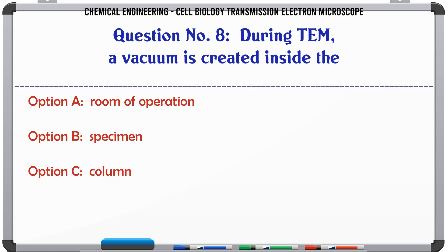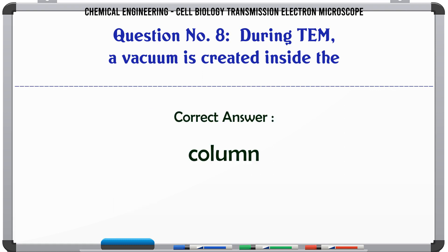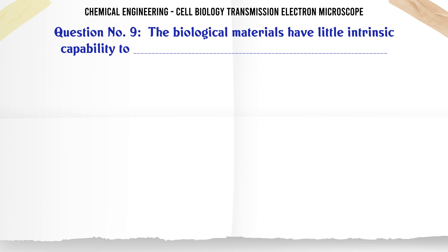Question 8: During TEM a vacuum is created inside the: A. Room of operation, B. Specimen, C. Column, D. Ocular system. The correct answer is column.